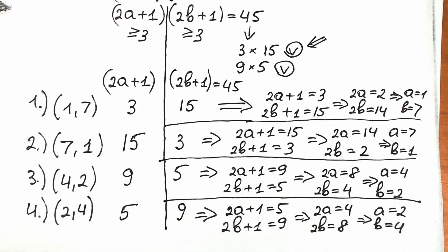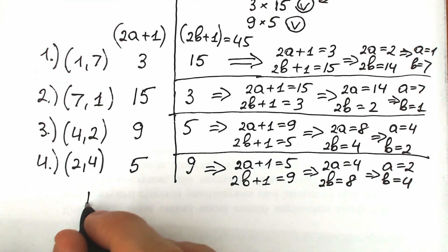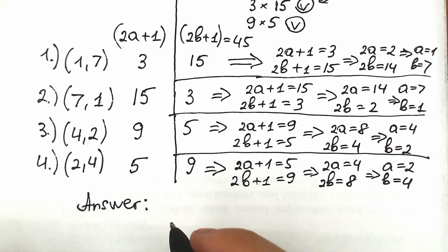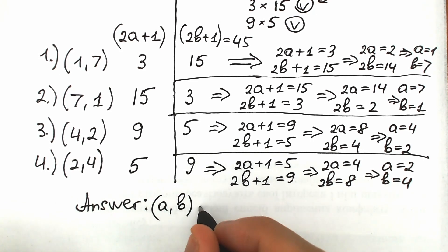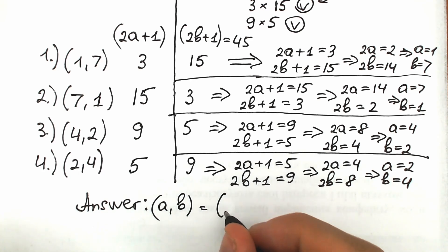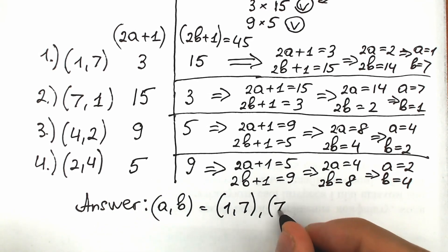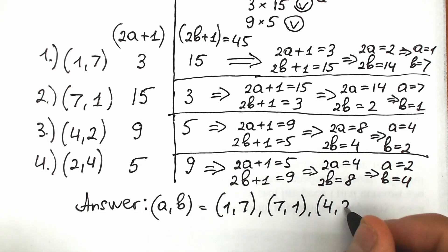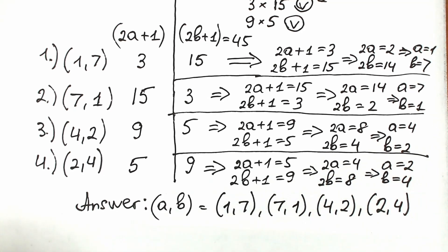You can also check these solutions in our original challenge. Our final answer — the four pairs (a, b) — are: (1, 7), (7, 1), (4, 2), and (2, 4). This is our complete solution to this challenge.